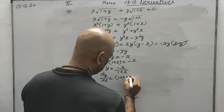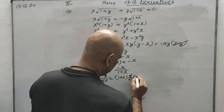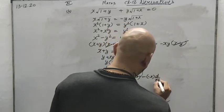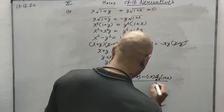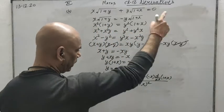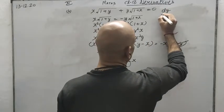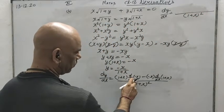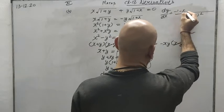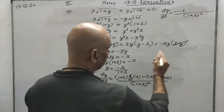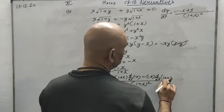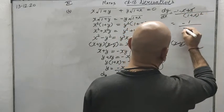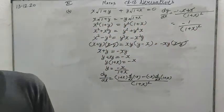Applying the quotient rule: dy by dx equals [(1 plus x) times d over dx of (minus x) minus (minus x) times d over dx of (1 plus x)] upon (1 plus x) squared. The differential of minus x is minus 1, giving minus(1 plus x) in the numerator; the differential of (1 plus x) is 1, giving plus x in the numerator. x and x cancel, so the final answer is minus 1 upon (1 plus x) squared.